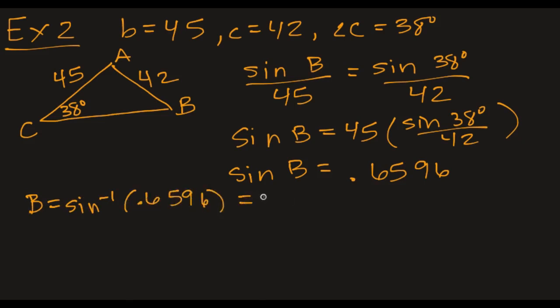So I get sine of B is 0.6596. So B is the inverse sine of that. My calculator spits out 41.3 degrees. And then we know this could be or 180 minus 41.3, which is 138.7. In this case, given that angle C is 38, either of these are options because we still have a little bit, not very much. If I add 138.7 plus 38, I get 176.7. I don't have a whole lot of room. It's a teeny tiny third angle, but I do have another option here.